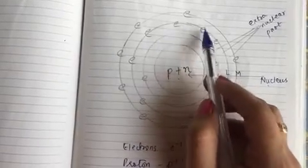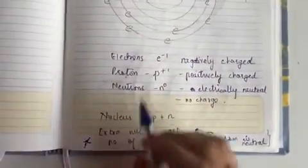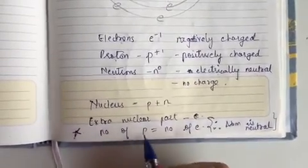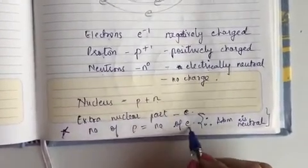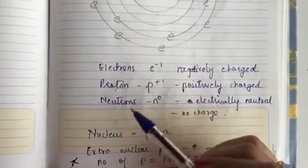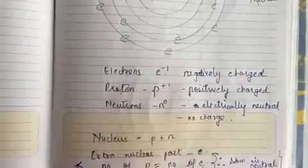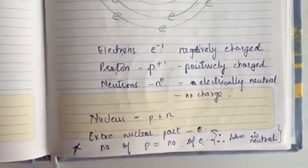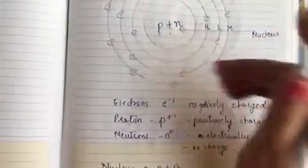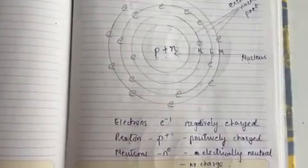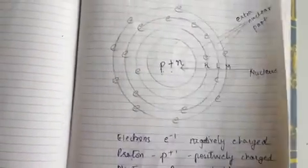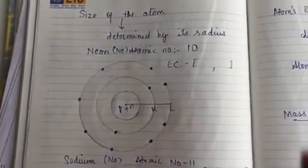In an atom, the number of protons is always equal to the number of electrons. The nucleus has protons and neutrons; the extra nuclear part has electrons. Because protons and electrons are always equal — for example, if an atom has 8 electrons and 8 protons, that is 8 negative and 8 positive charges, which equals zero. That is why an atom is said to be neutral.